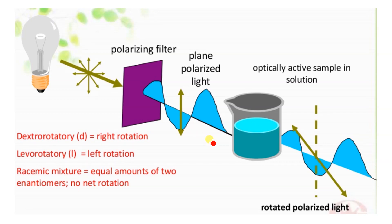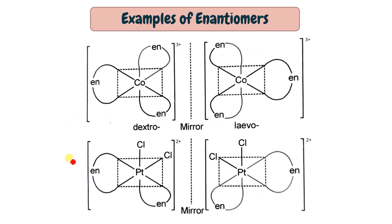When the PPL turns to the left side on passing through a substance, the substance is called levorotatory (L). If equal amounts of both enantiomers are present — both dextro and levo — and the substance rotates the PPL equally in both directions, it is called a racemic mixture, which is optically inactive due to external compensation.